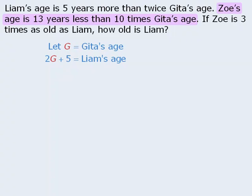Next we are told that Zoe's age is 13 years less than 10 times Gita's age. So 10g represents 10 times Gita's age, and if we subtract 13 from this, we have an expression that represents Zoe's age. Now that we have assigned variable expressions to the three ages, we want to write an equation.